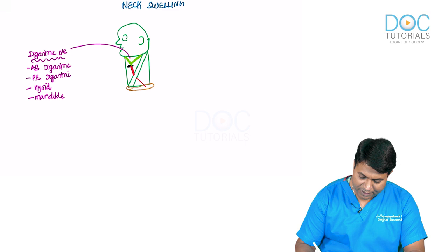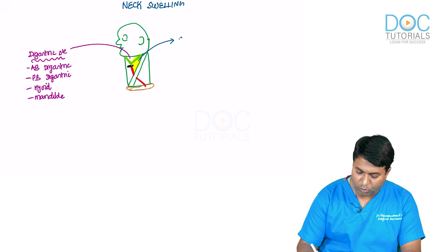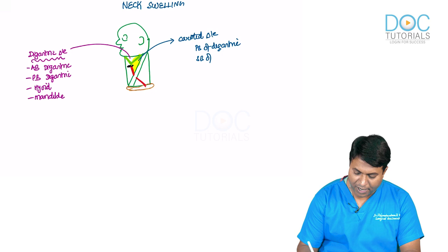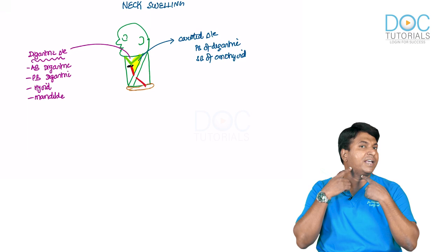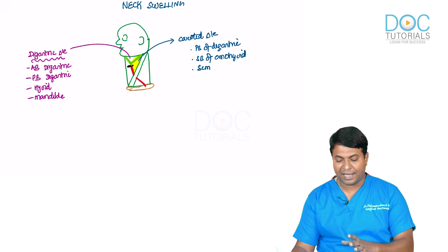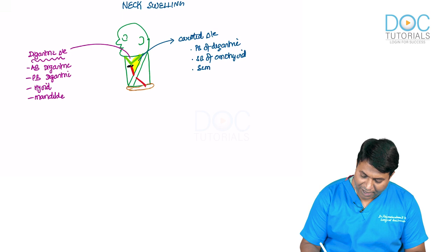The next triangle — this muscle is the superior belly of omohyoid and this is the inferior belly of omohyoid. The triangle highlighted in yellow is known as the carotid triangle, bounded by the posterior belly of digastric, superior belly of omohyoid, and the sternocleidomastoid muscle. These three together form the carotid triangle.